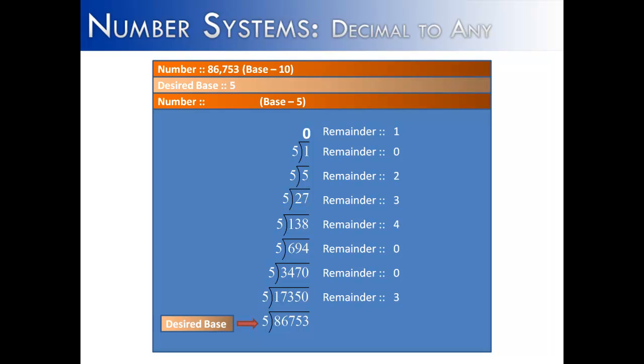Then all you have to do is take the numbers from the top and go down, and you will get the number in base 5. 86,753 is 10234003 in base 5.